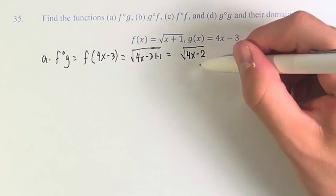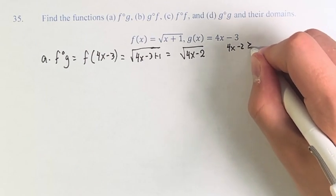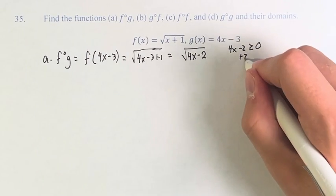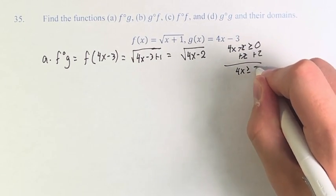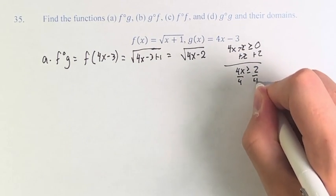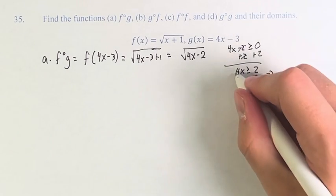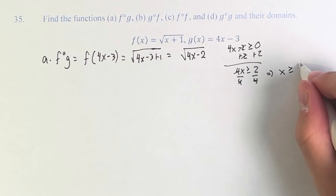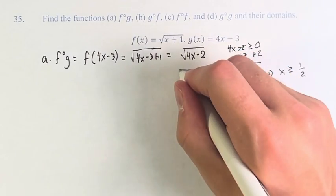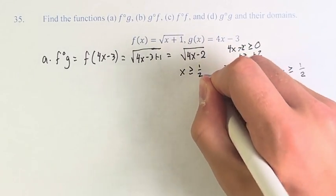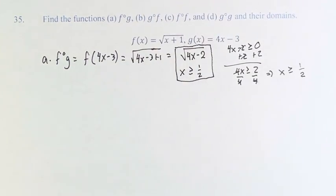What is the domain of this? Well, we can't take the square root of a negative number, so therefore 4x minus 2 has to be greater than or equal to 0. We can now simplify this: 4x is greater than or equal to 2. Dividing by 4, this gives us x is greater than or equal to 2 divided by 4, which is 1 half. So therefore x has to be greater than or equal to 1 half. This is f of g.